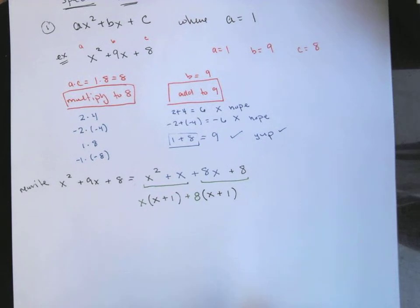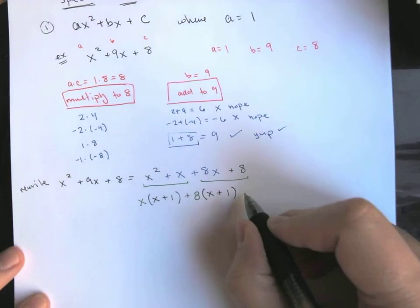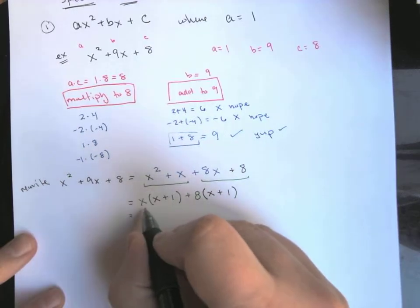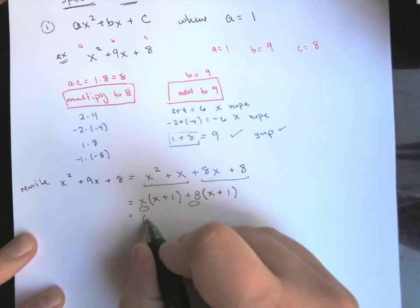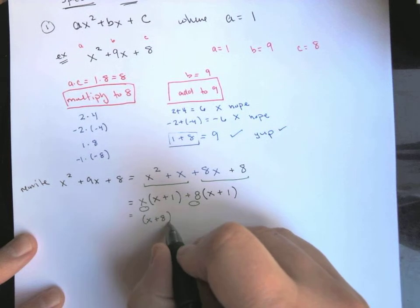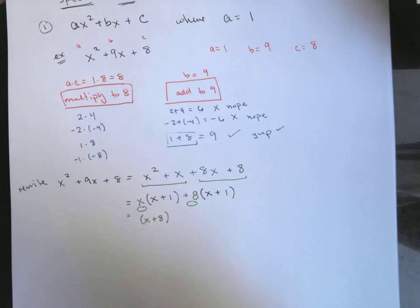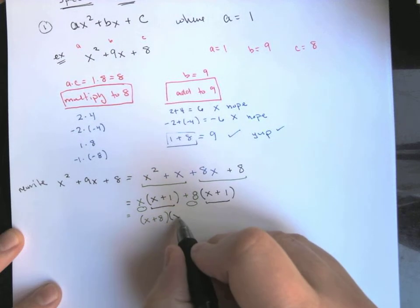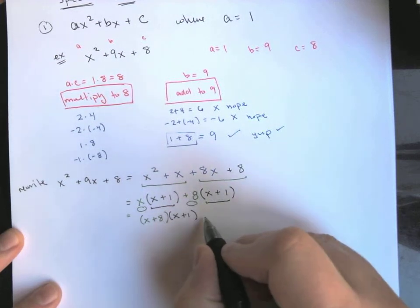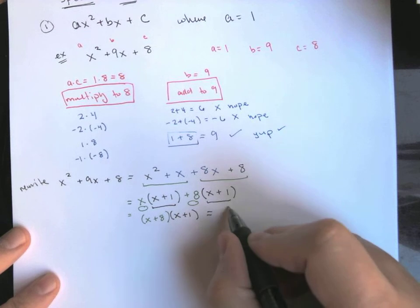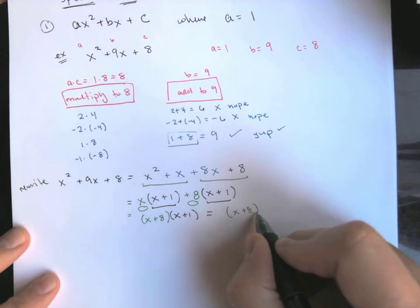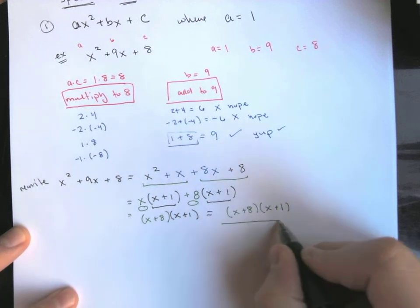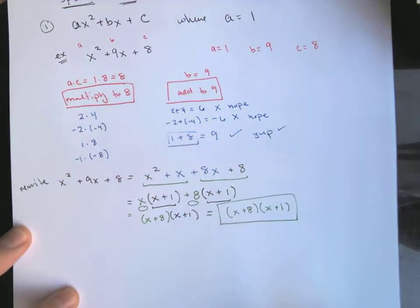And so to finish this off, what are we left with? Well, I'm left with my two GCFs out in front, x plus 8 in parentheses, and then my common term in parentheses, x plus 1. So this is x plus 8 times x plus 1. And that's our factored version.